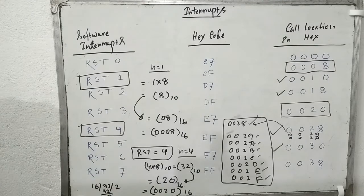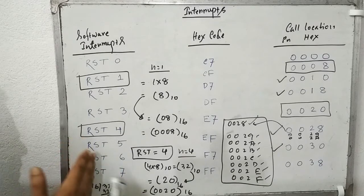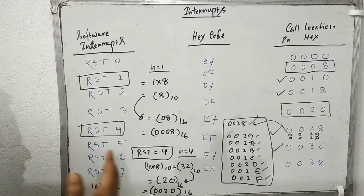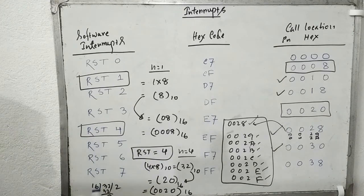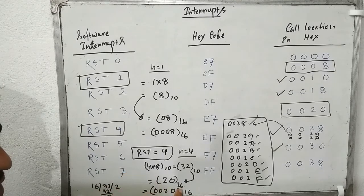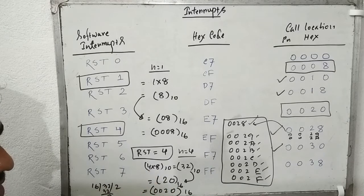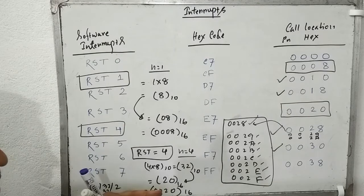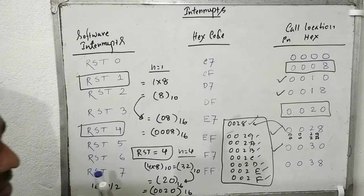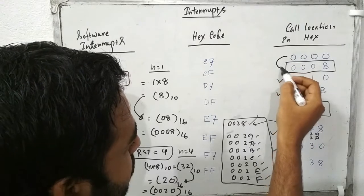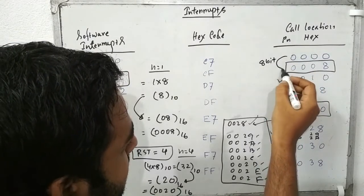Each and every vector interrupt — whether it is a hardware interrupt like RST or a software interrupt like RST 3 — all vector interrupts have their own address location in memory, and all vector interrupts consume 8 bits or 1 byte at their memory address location. The difference between consecutive interrupt address locations is 8 bits.